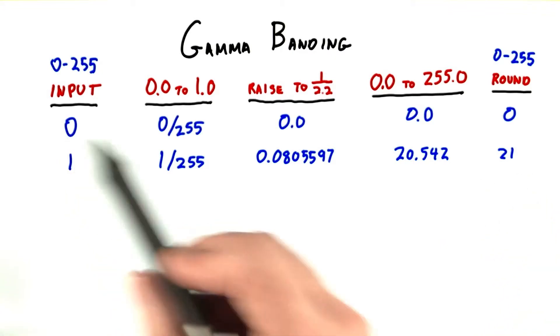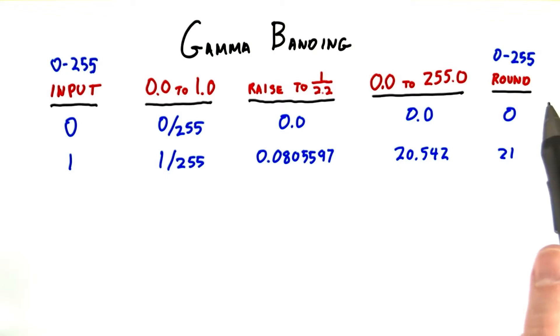If the input is 0, this converts to 0 on output. No surprises there. With 1, we jumped up to a level of 21 on output. Level 2 jumps to 28.